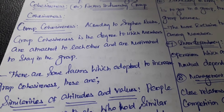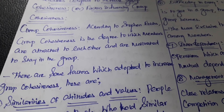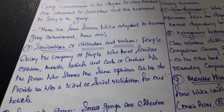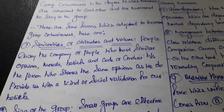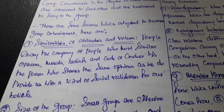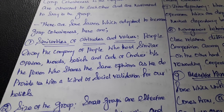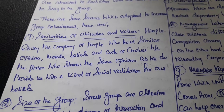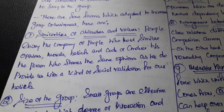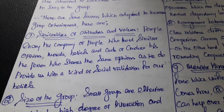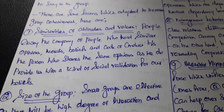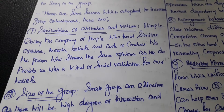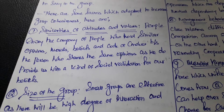Members should be attracted to each other and motivated to remain in the group. The first factor that increases group cohesiveness is similarity of attitudes and values. People enjoy the company of those who hold similar opinions, morals, beliefs, and a code of conduct, because a person who shares the same opinions provides a kind of social validation for our beliefs. When members share the same opinions, morals, and beliefs, they will share things with group members easily, which increases group cohesiveness.